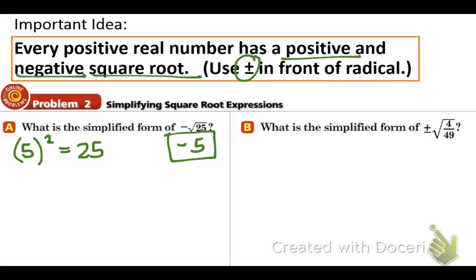In part B, we have plus or minus square root of 4 over 49. So, we're trying to figure this out. What squared gives us 4 over 49? What squared gives you 49? 7. So, 2 sevenths to the second is 4 over 49.